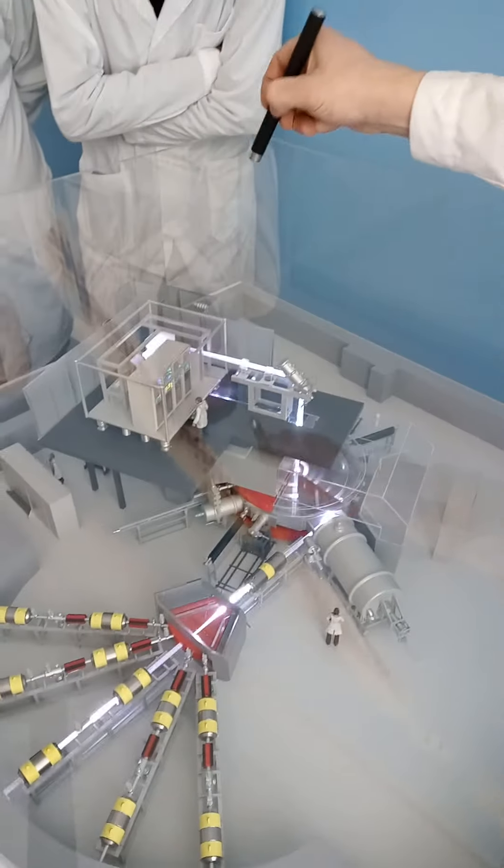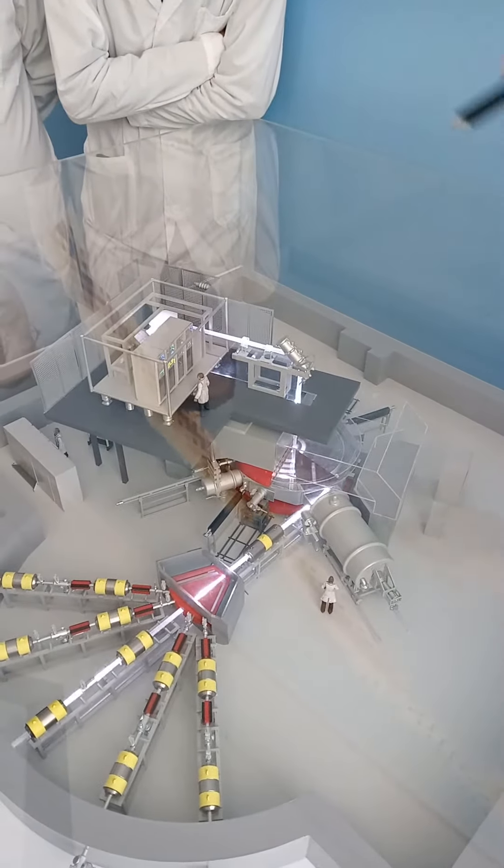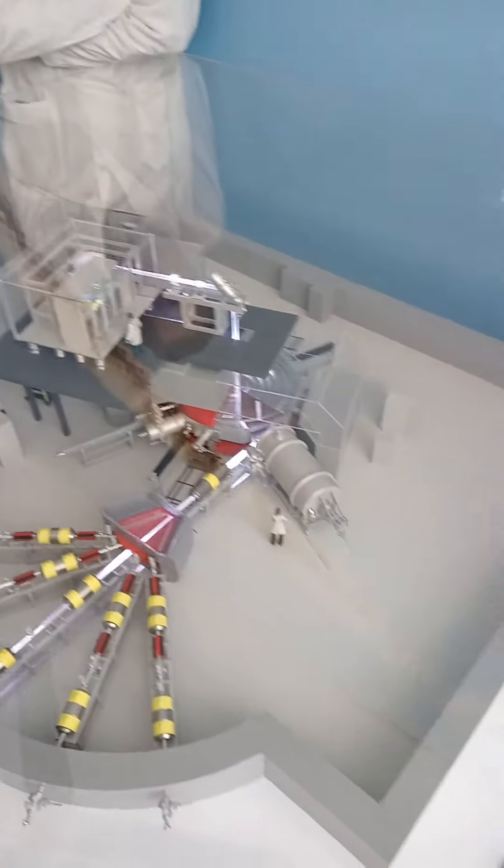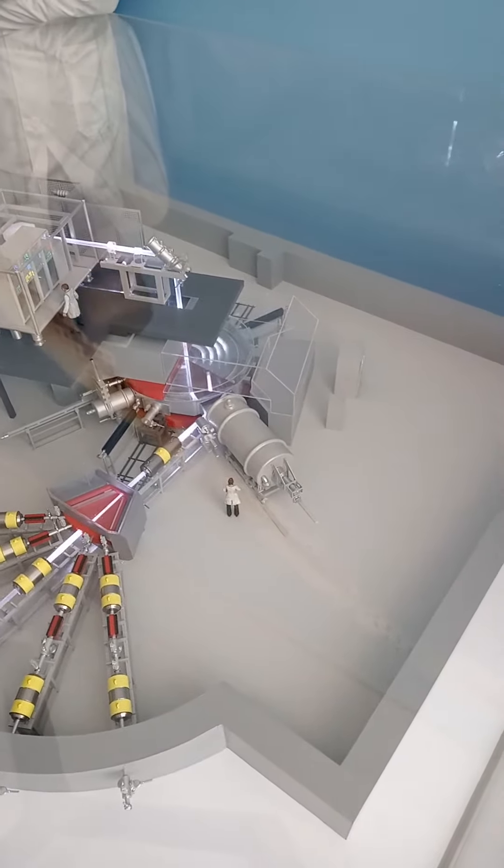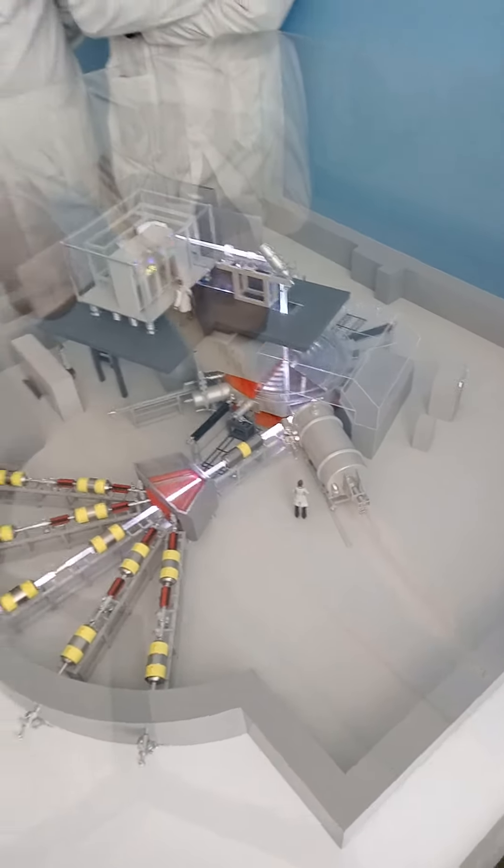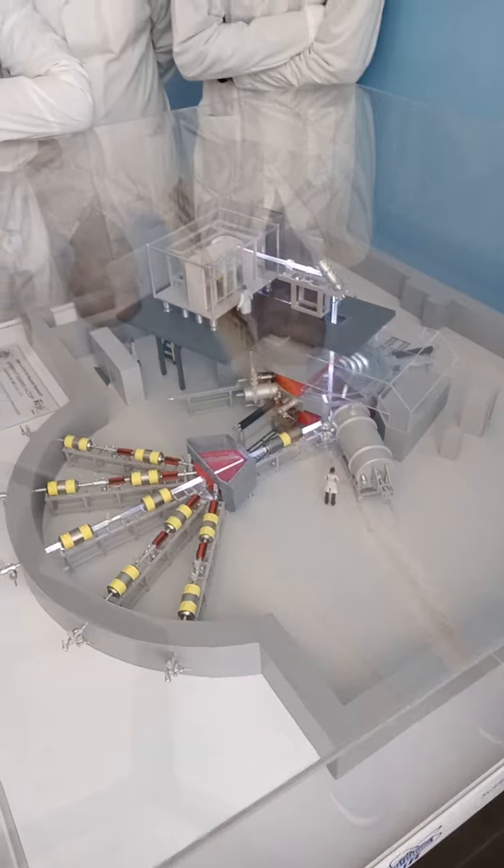After separation, they move the ions inside the cyclotron to the center. There is a special system named the inflector. It rotates the beam from the vertical direction to the horizontal direction.